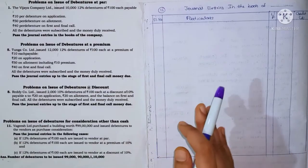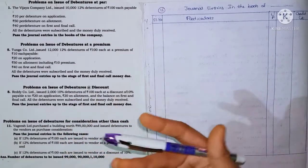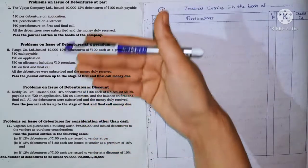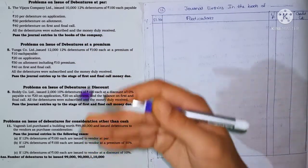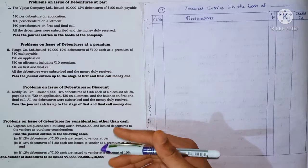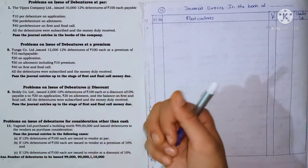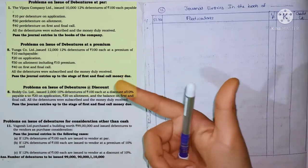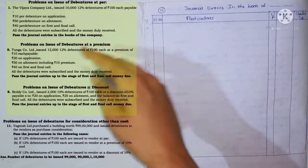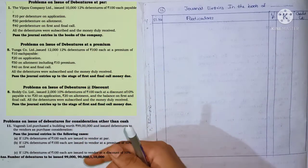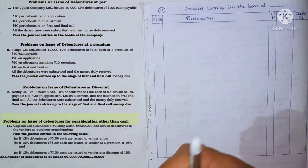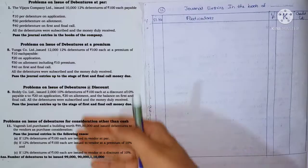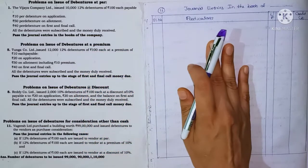Hello students. In this session, I will discuss a debenture 6-marks problem. I will explain the journal entries for four cases: debenture issued at par, debenture issued at premium, debenture issued at discount, and debenture issued for consideration other than cash. In these 4 cases, we will explain the 6-marks problem.